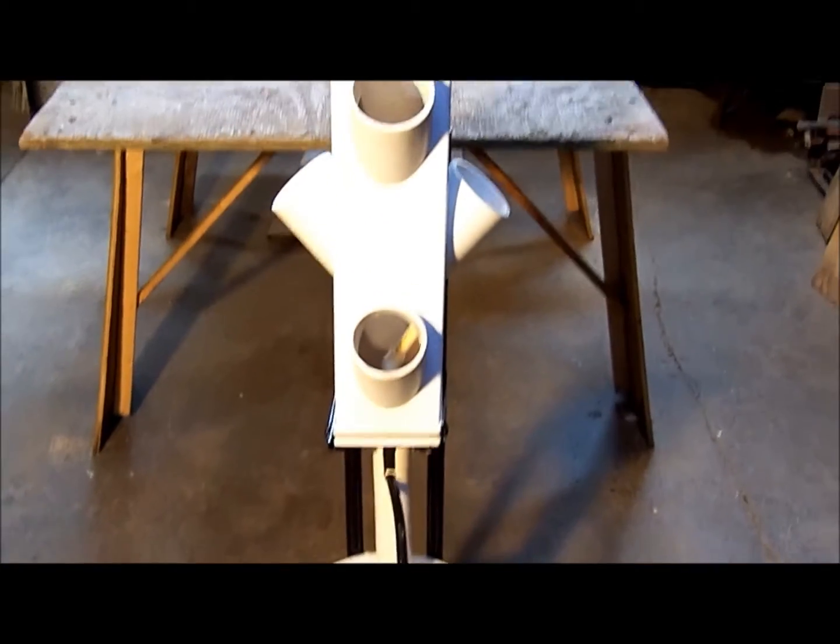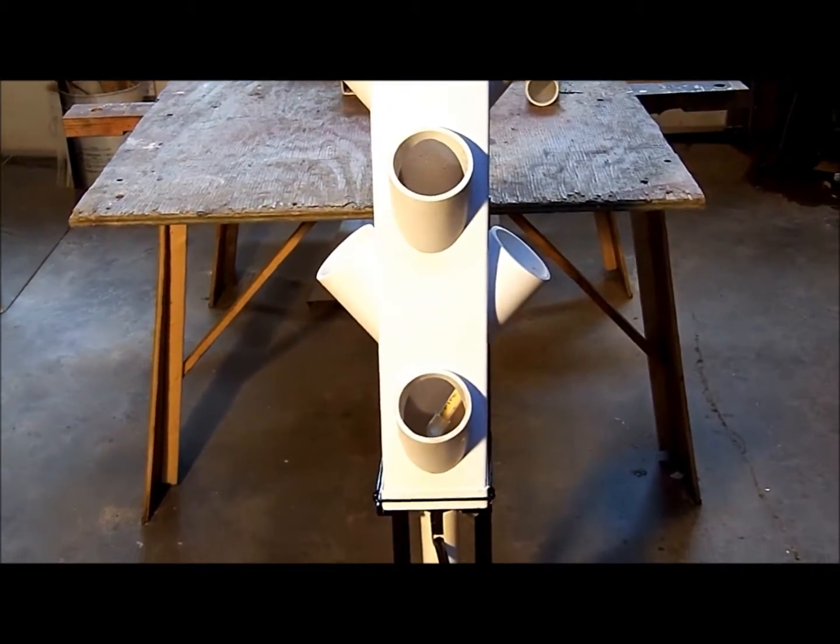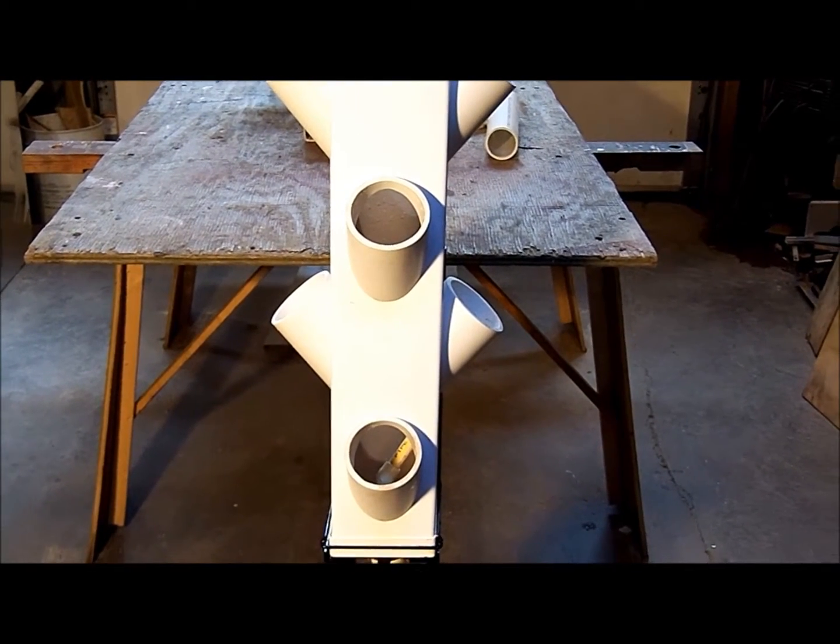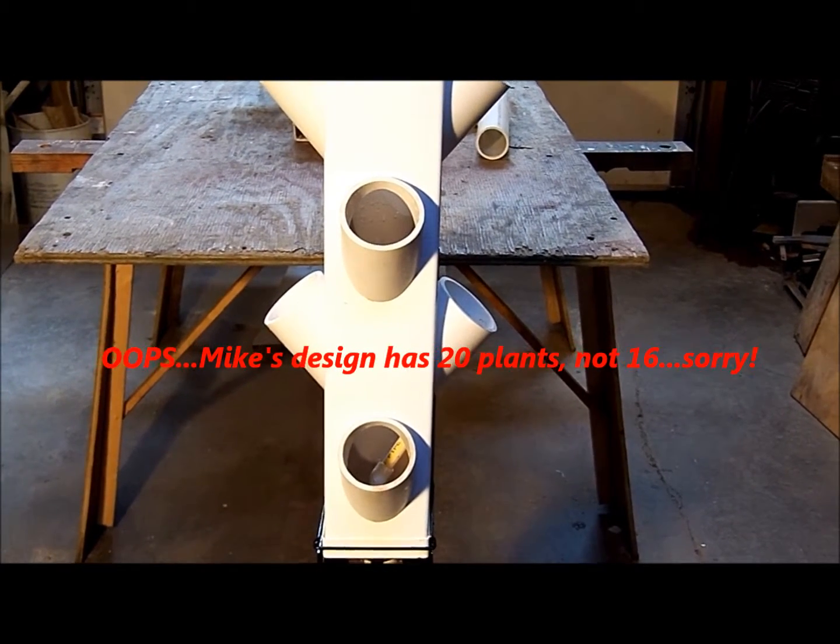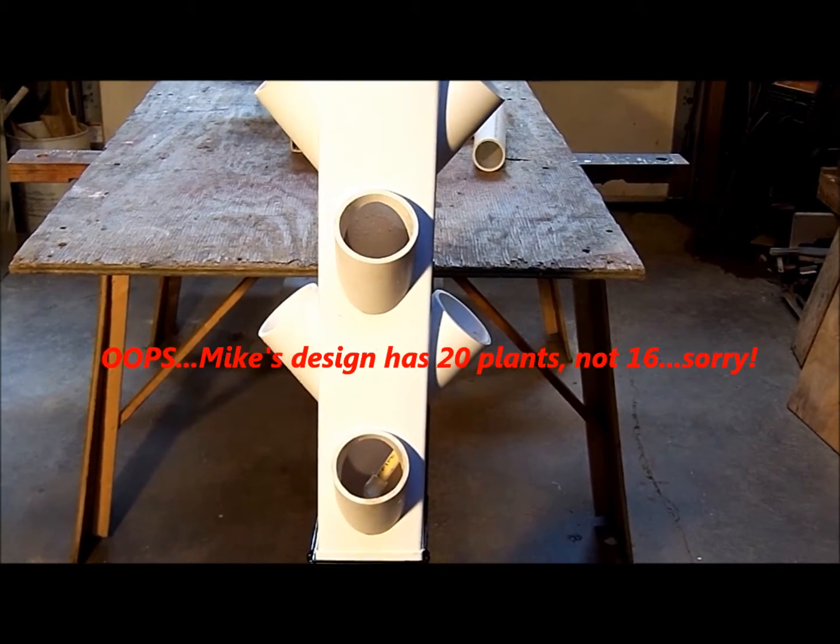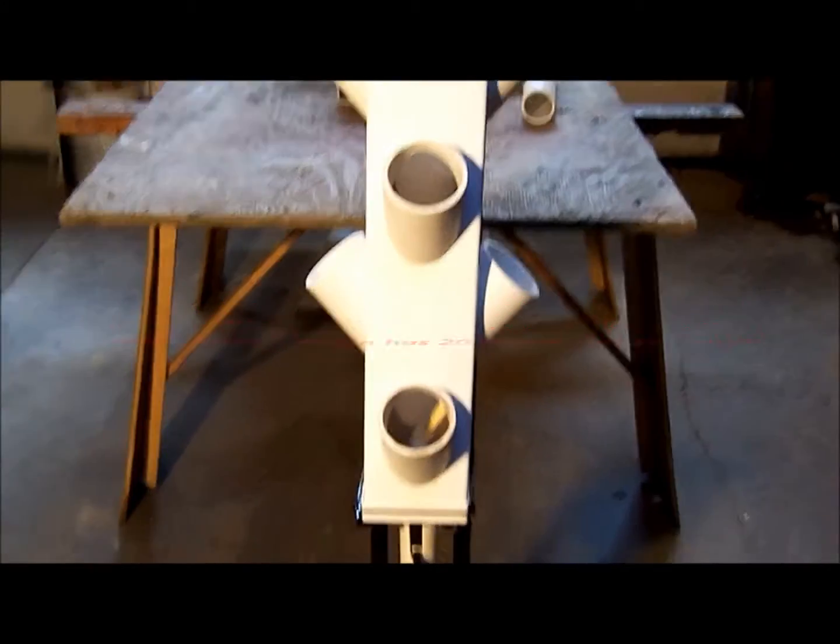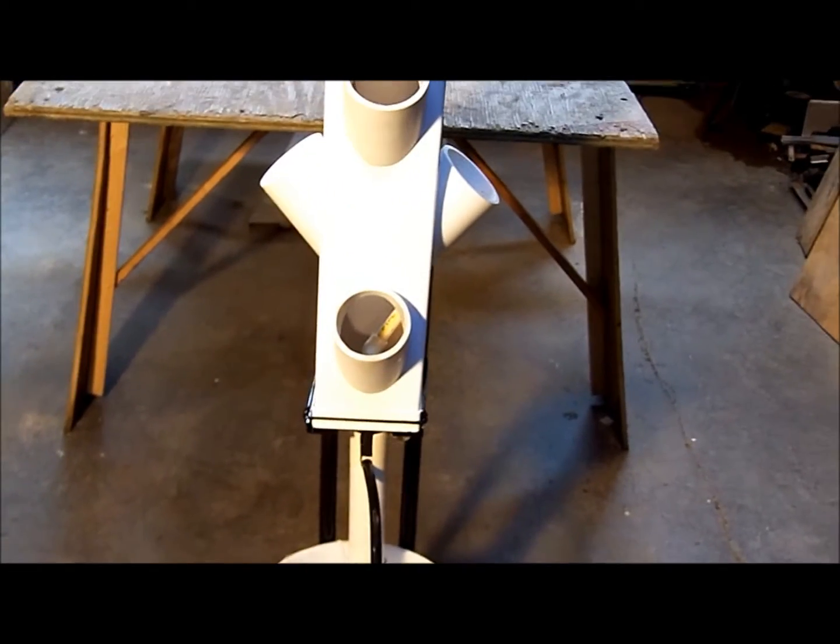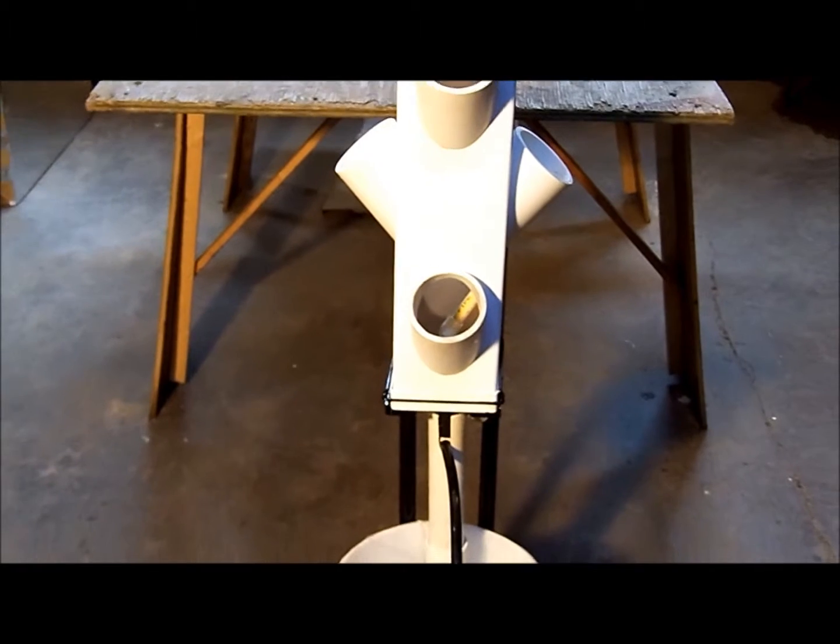Doing this in this manner, I can have 32 plants in two four foot towers versus 16 plants in one six foot tower that Mike came up with. So this may be a little more efficient, at least I hope so.